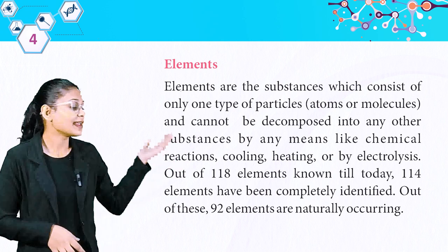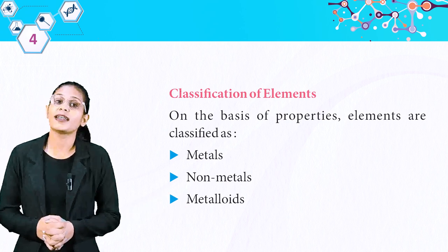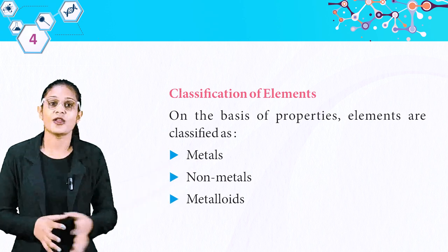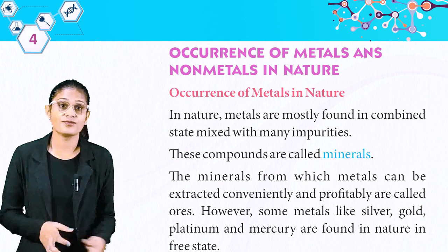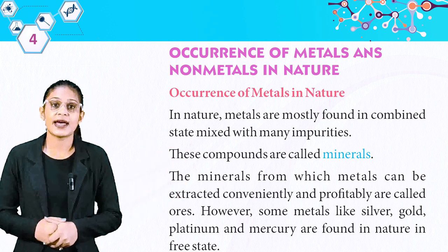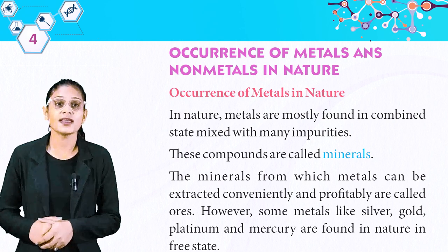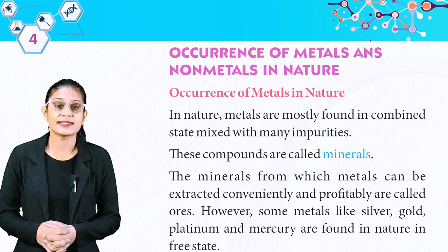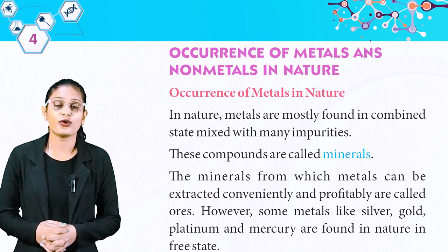Now we have the classification of elements. On the basis of properties, elements are classified as metals, non-metals, and metalloids. In nature, metals are mostly found in combined state mixed with many impurities. These compounds are called minerals. The minerals from which metals can be extracted conveniently and profitably are called ores.